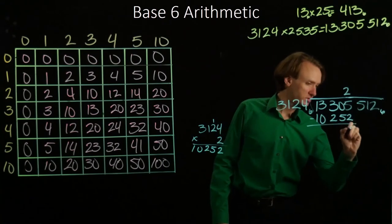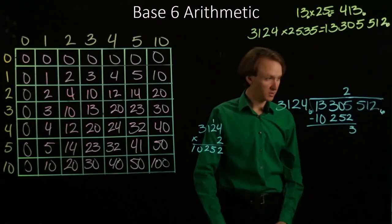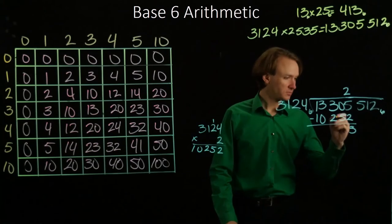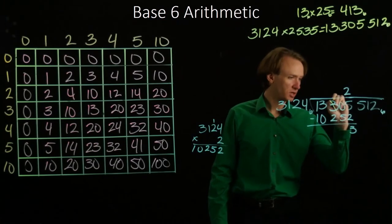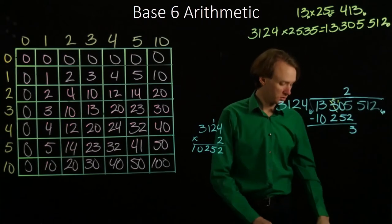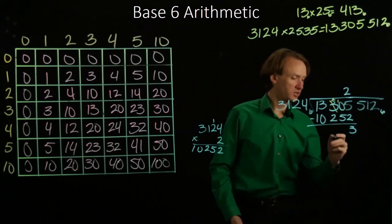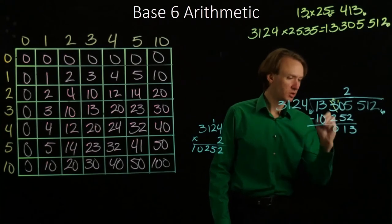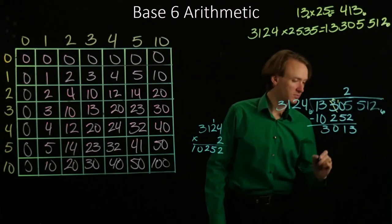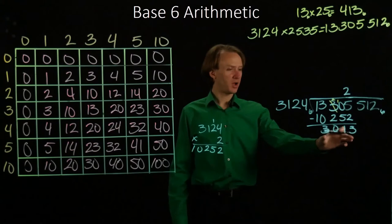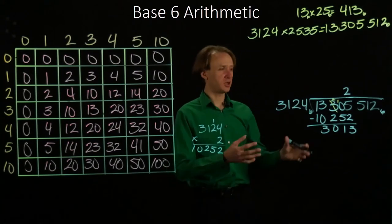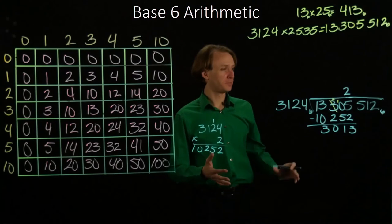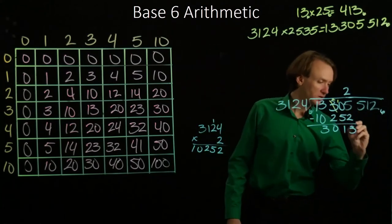5 minus 2 is 3. I want to do 0 minus 5, so I'll need to borrow something from the 3. Now I have 10 minus 5 is 1. 2 minus 2 is 0. 3 minus 0 is 3. So I did come out with something smaller than my 3124. So I've done my arithmetic correctly so far. Pull down another 5.